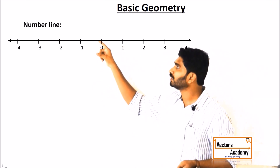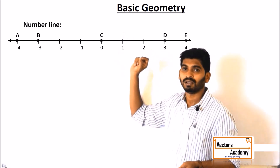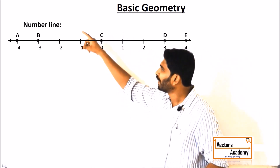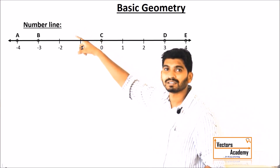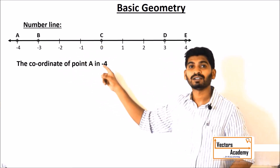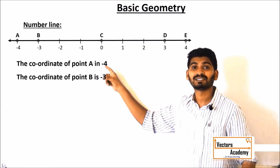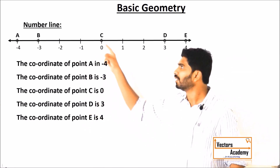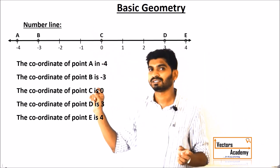Now it can also contain certain points, for example A, B, C, D, E. Now how do we read this number line? You can see point A is corresponding to the point minus 4, so I can say the coordinate of A is minus 4, whereas the coordinate of B is minus 3, and so on. This is how you read the number line. The numbers are called as coordinates whereas the alphabets are called as the points.